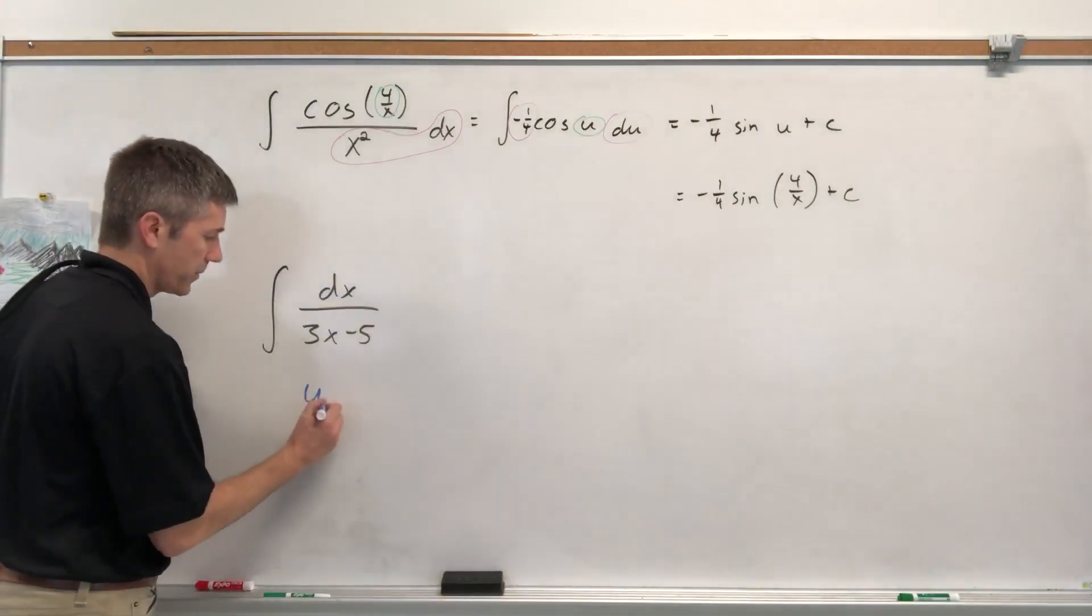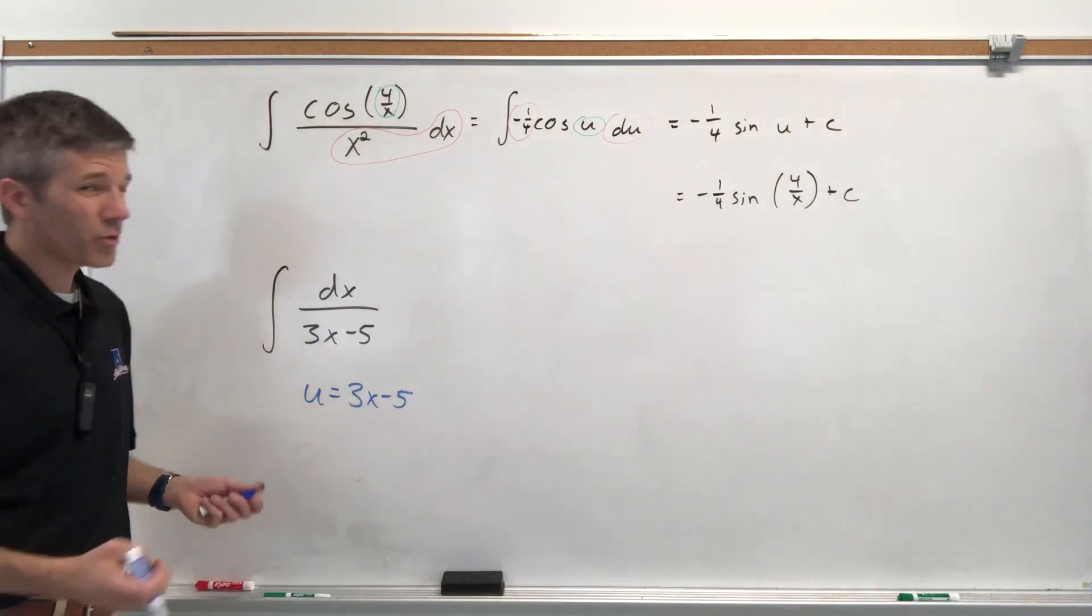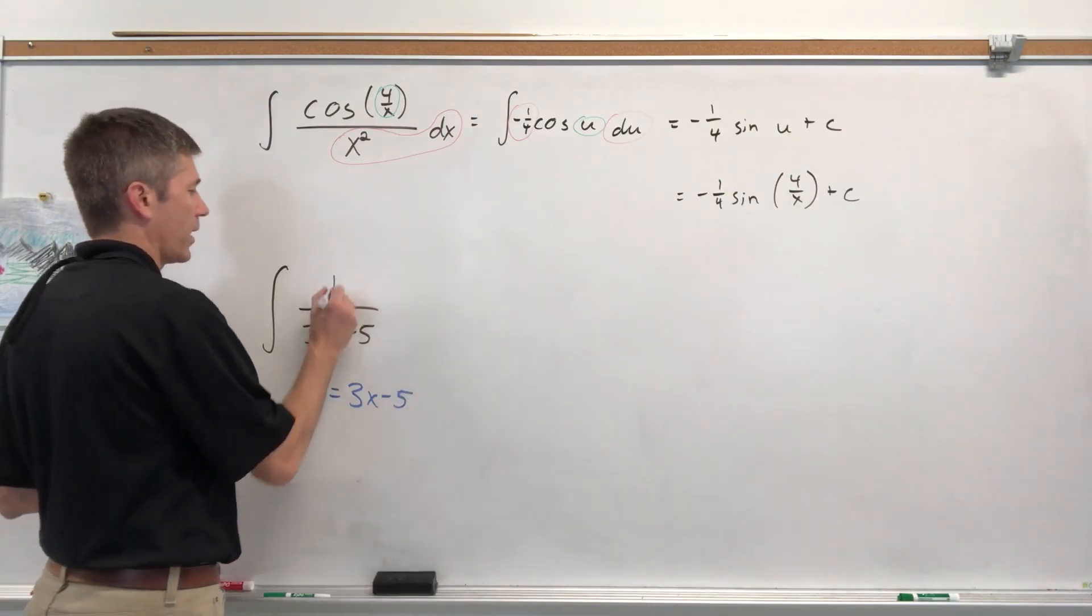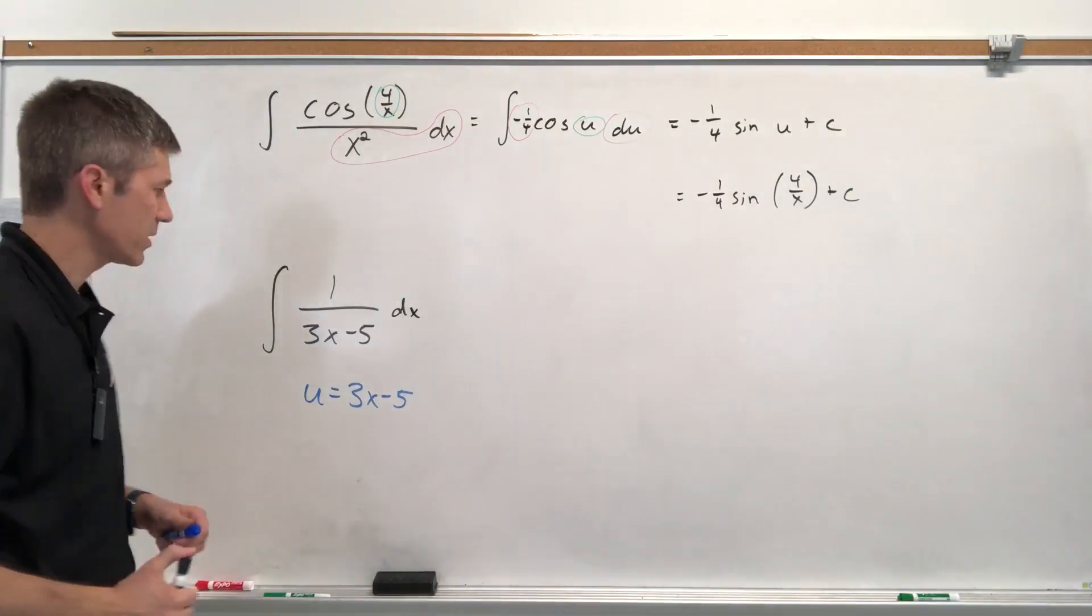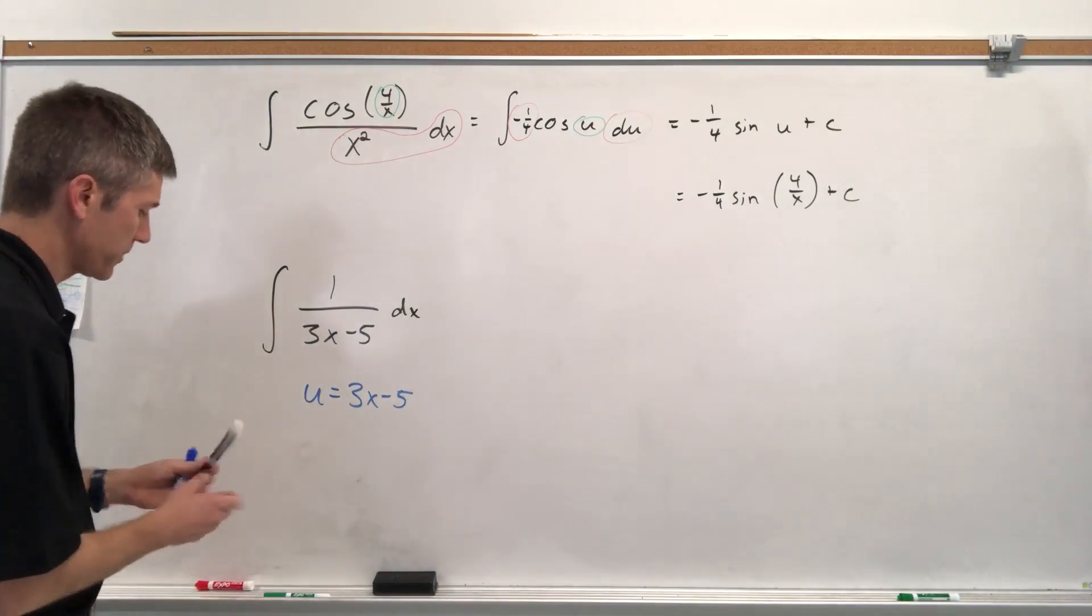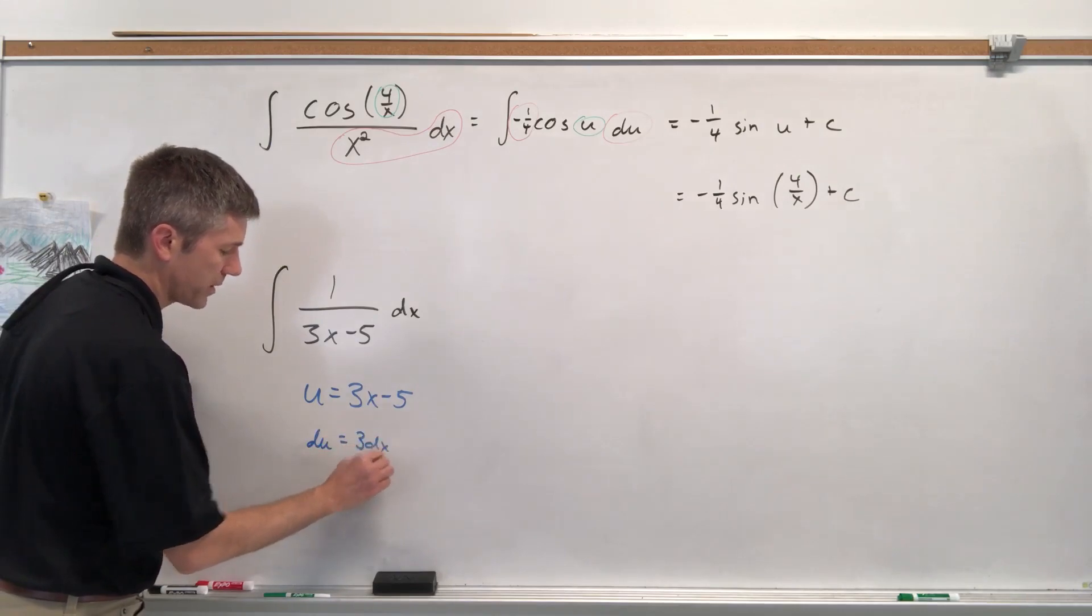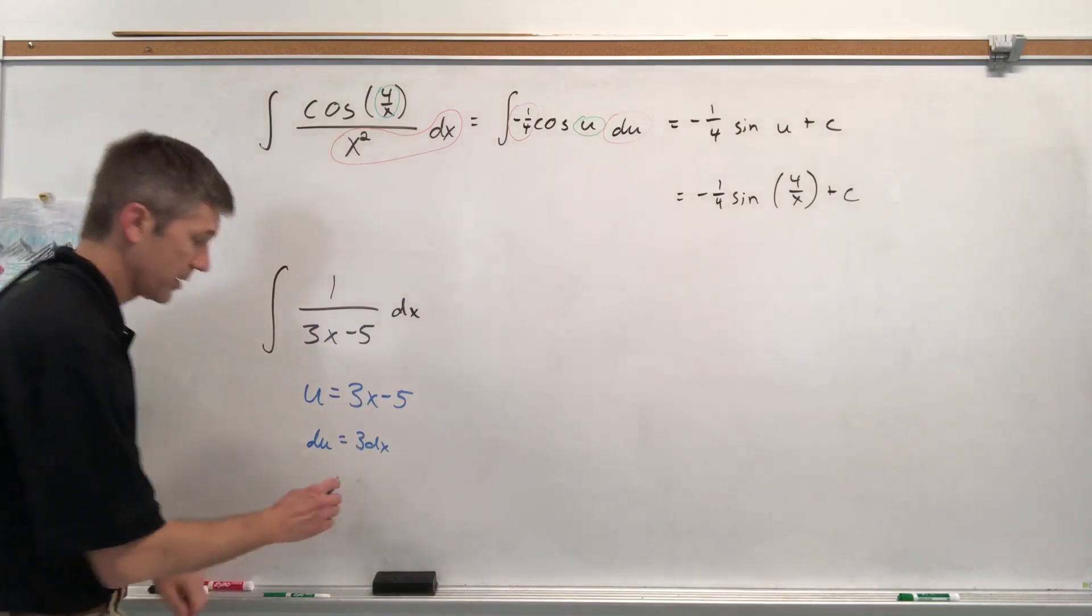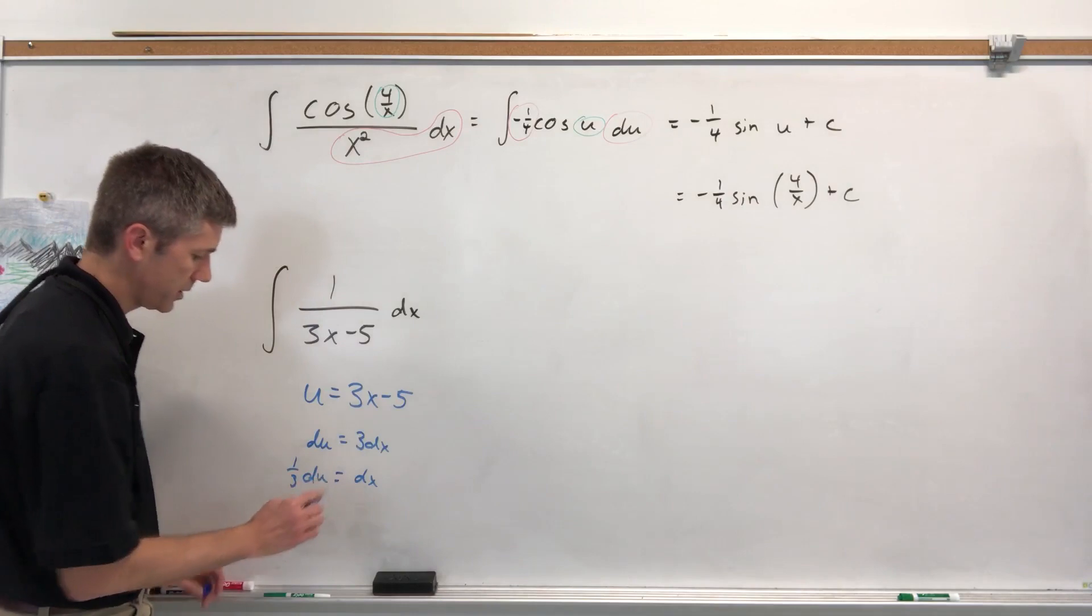So U is 3X minus 5. Okay. Well, what you really have here, and if you want to rewrite this, you could. What you really have here is a 1 there and a DX there. And now I think it's maybe a little more obvious that your denominator is where most of the stuff is, the inner function is. So the derivative of that would be 3. So the derivative of U is 3 DX. I don't want 3 DX. I want 1 DX. Then I'll get what I want there. Divide by 3. 1 third DU.